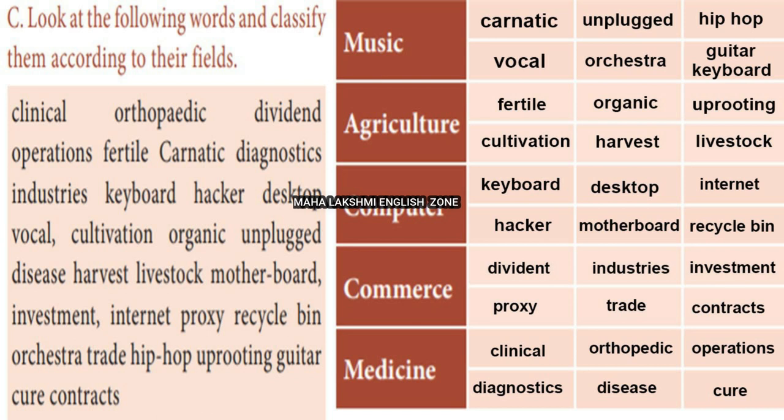Words related to music: Carnatic refers to Carnatic music; unplugged means removing the connecting wires; hip-hop is a type of music; ochre is a type of music; orchestra is a group of people who sing songs together; and guitar is a musical instrument.